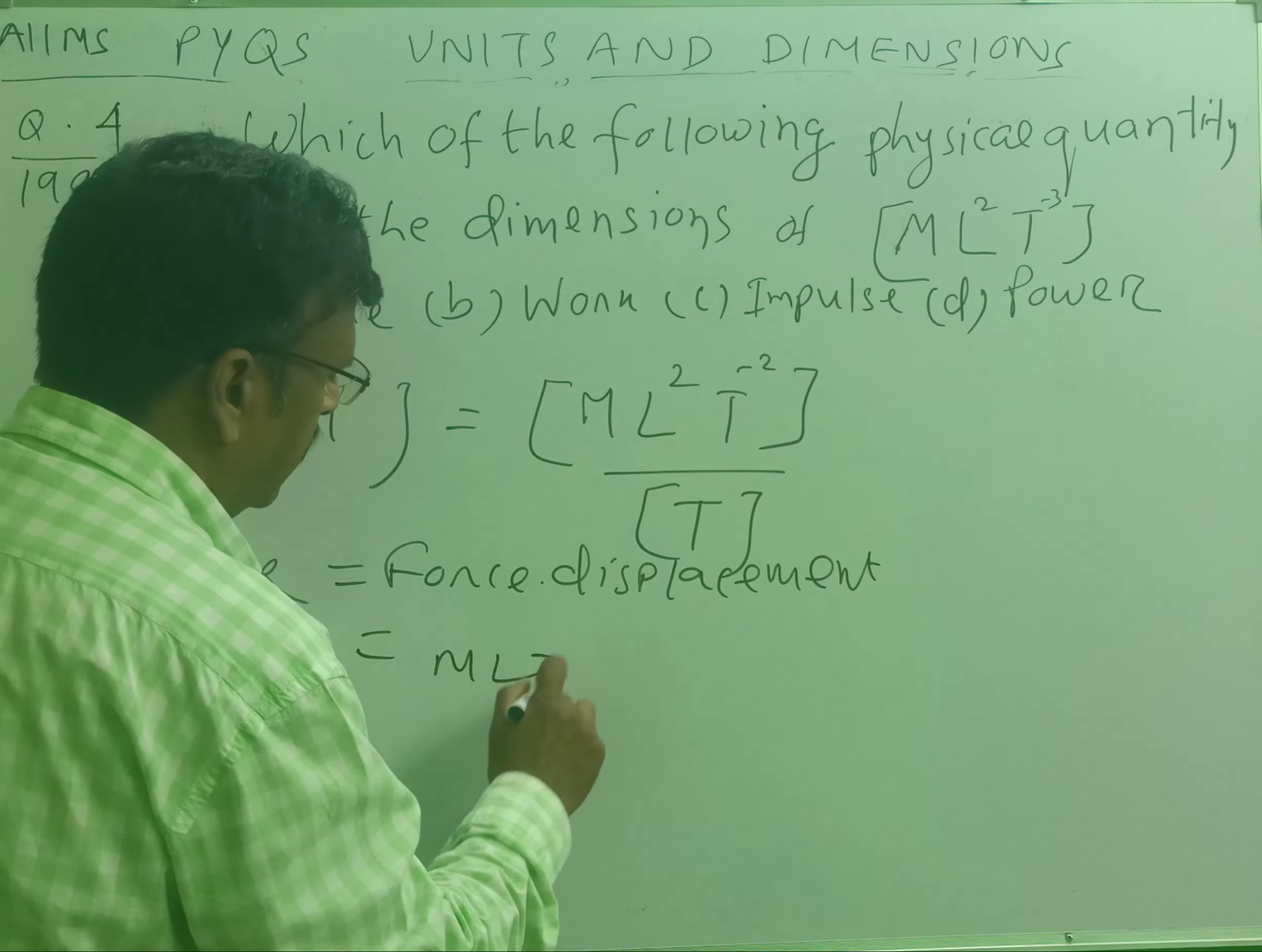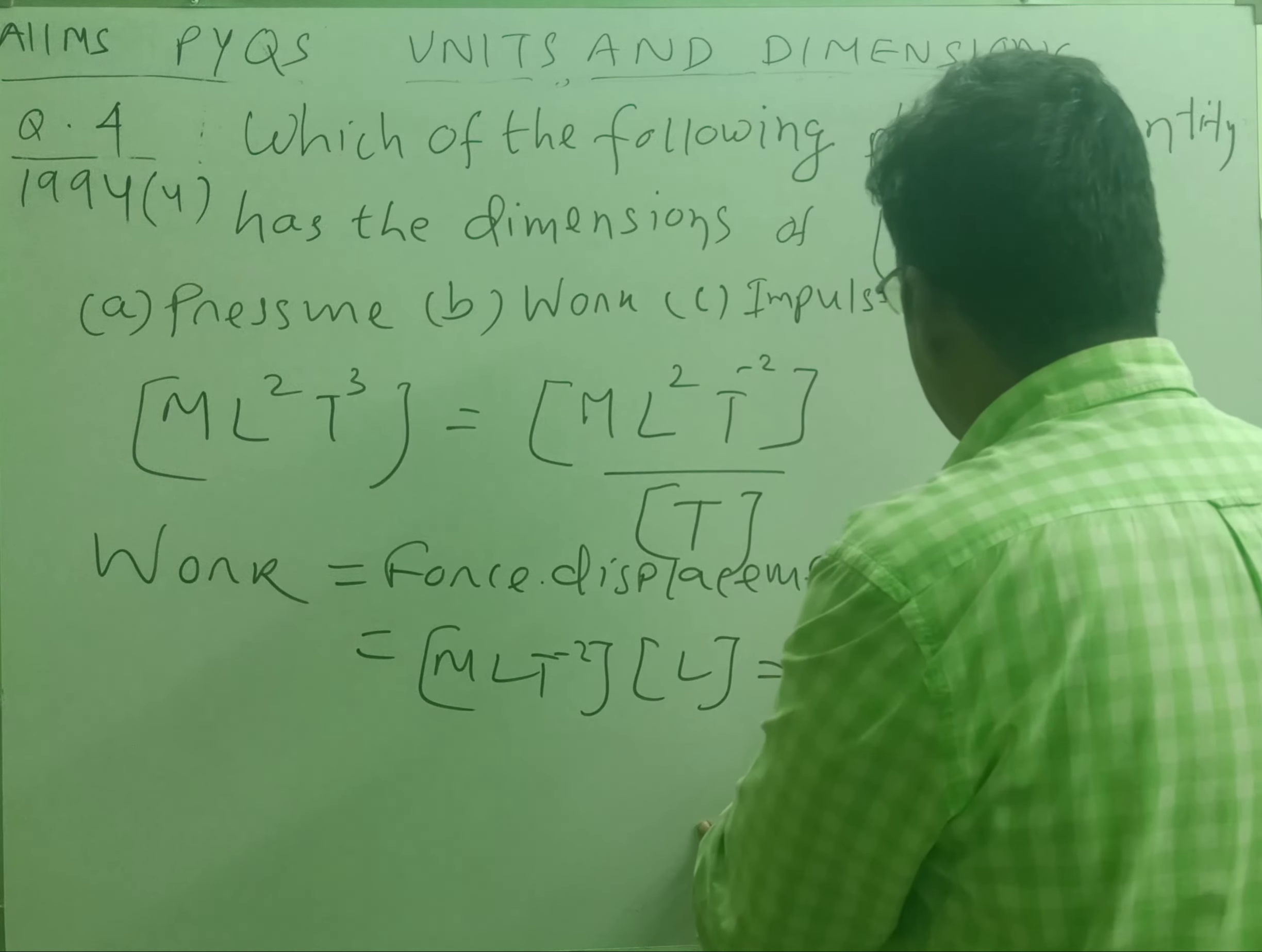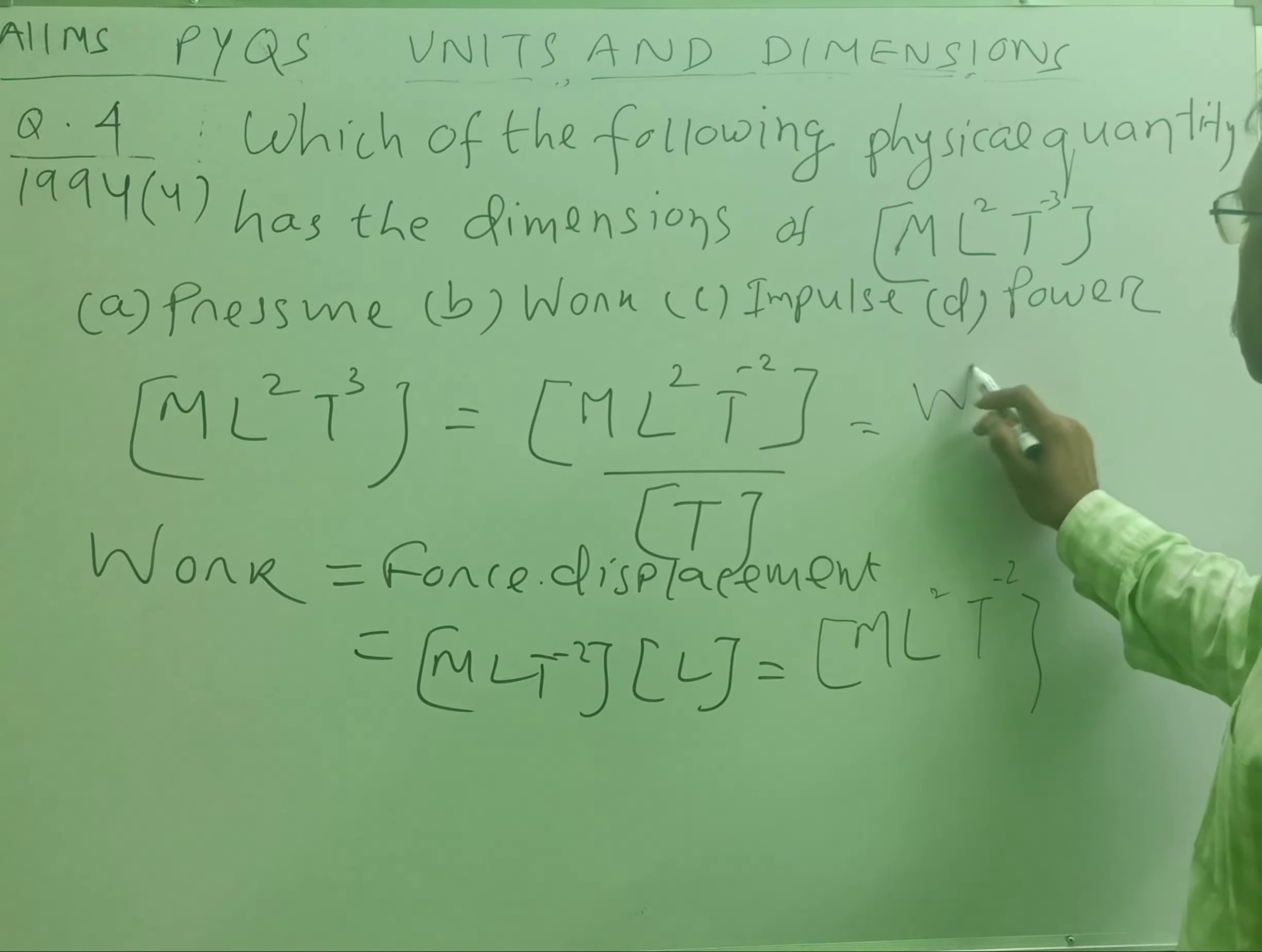And that is, what is the dimensional formula of force? That is ML T⁻². And that of displacement is L. So the dimensional formula of work is ML² T⁻². So this is nothing but work done.